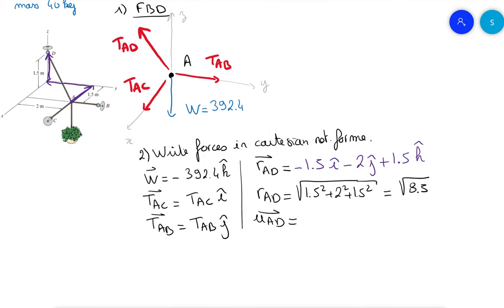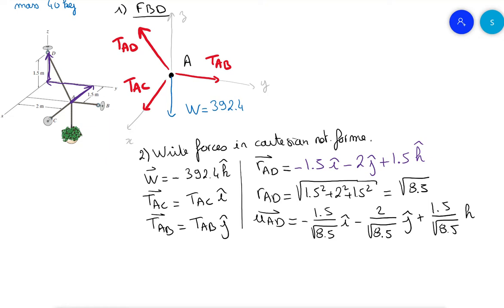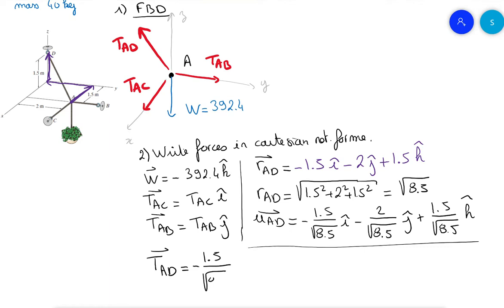The unit vector UAD has components: minus 1.5 divided by the square root of 8.5 on i-hat, minus 2 divided by the square root of 8.5 on j-hat, and plus 1.5 divided by the square root of 8.5 on k-hat. Now that we have the unit vector direction, we can write TAD in terms of its magnitude times the unit vector.